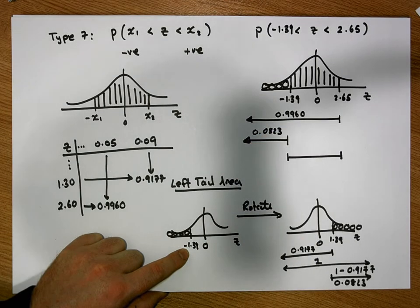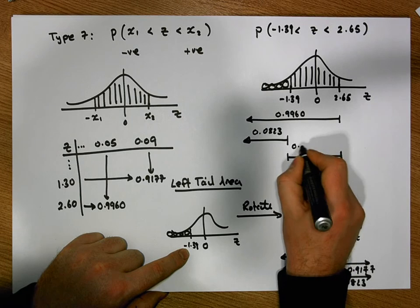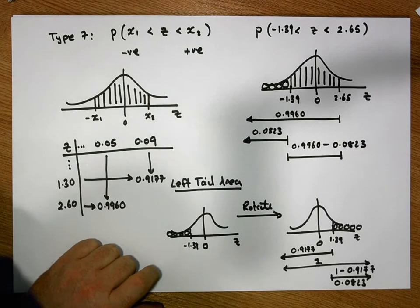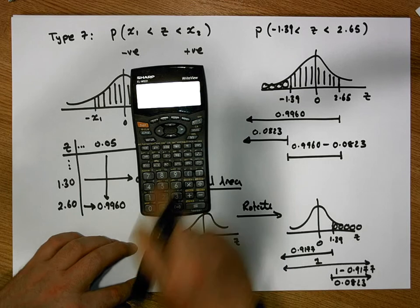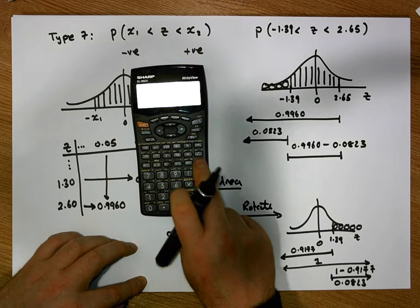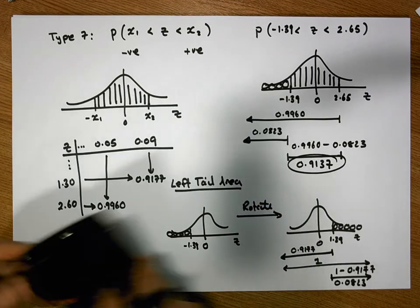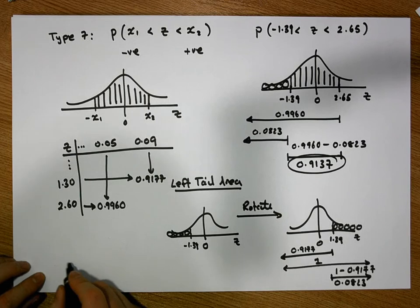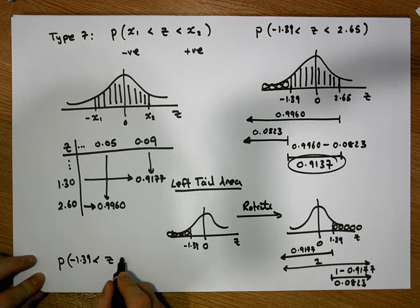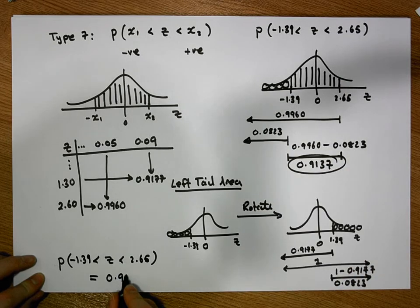That was the unknown value we needed. Now, taking the shorter line away from the longer line gives us the area between the two values. The longer line is 0.9960 and we subtract the shorter line, which is 0.0823: 0.9960 minus 0.0823 gives us a value of 0.9137. Therefore, the probability of observing a z-score greater than minus 1.39 and less than 2.65 is equal to 0.9137.